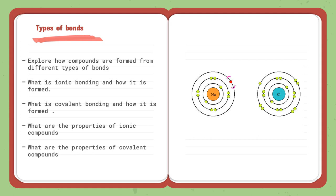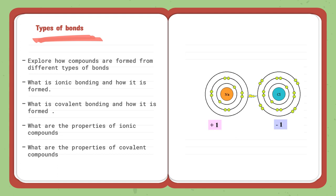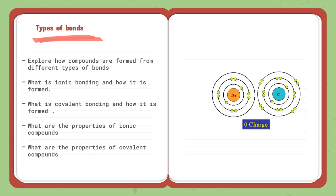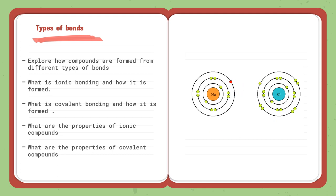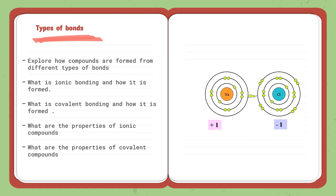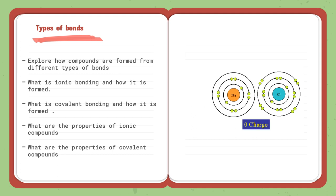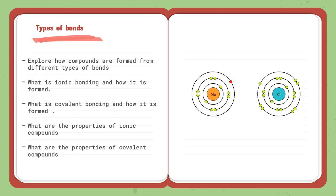The fourth lesson is types of bonds. Since compounds are made by sharing valence electrons, we will learn how to determine the type of bond in a compound. There are two types of bonds: ionic bonding and covalent bonding. We will learn how each is formed, and then examine the properties of ionic compounds versus covalent compounds.